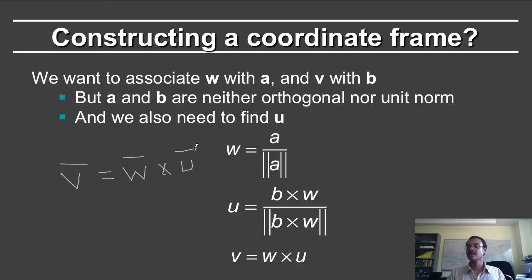Of course this fails when this quantity is equal to 0. So if b and w are aligned with each other, in which case their cross product is equal to 0, then they are really the same vector. a and b are the same vector and you cannot create the coordinate frame.